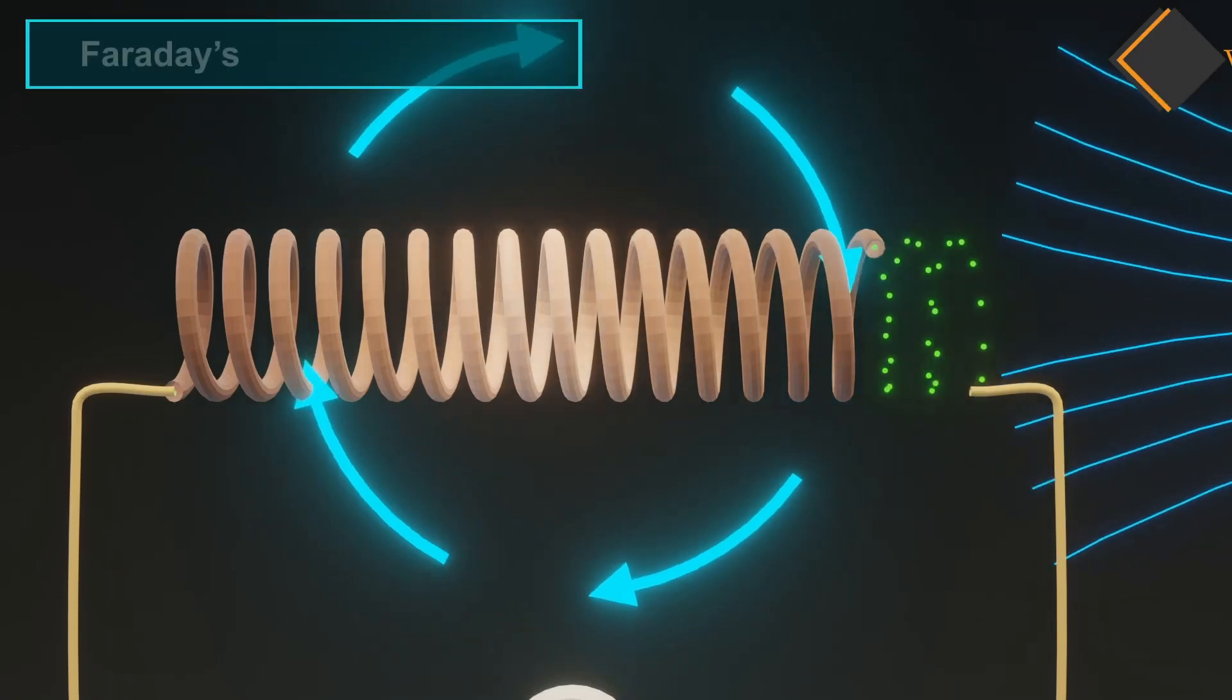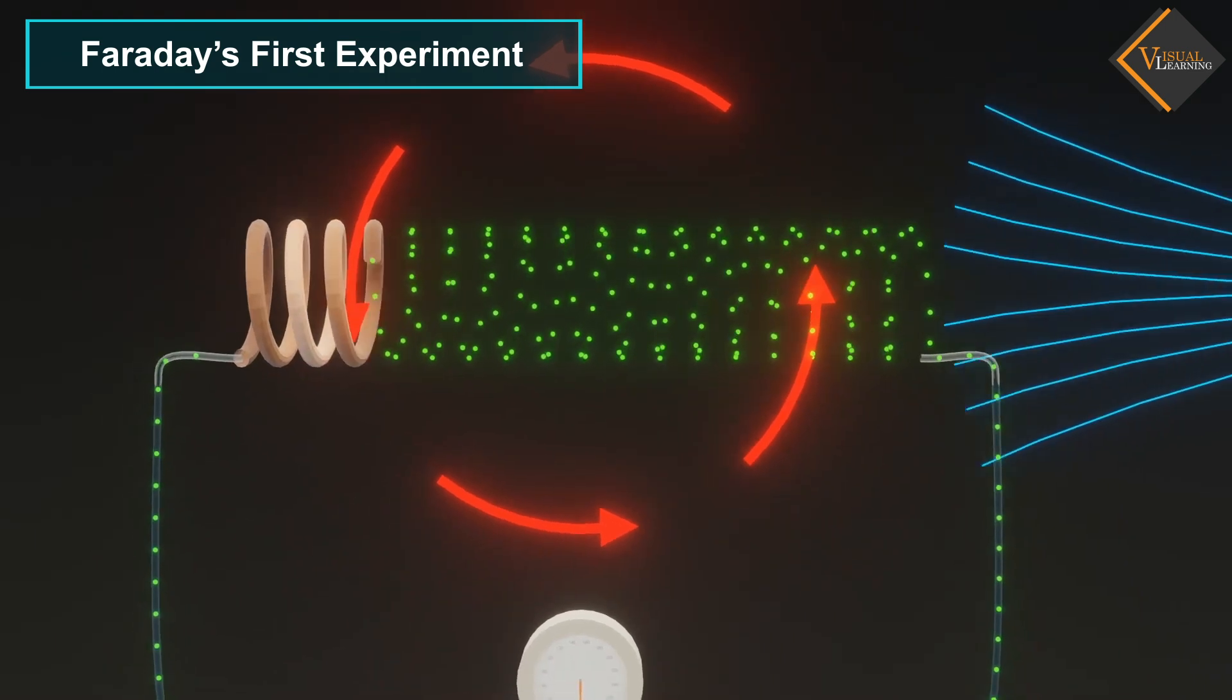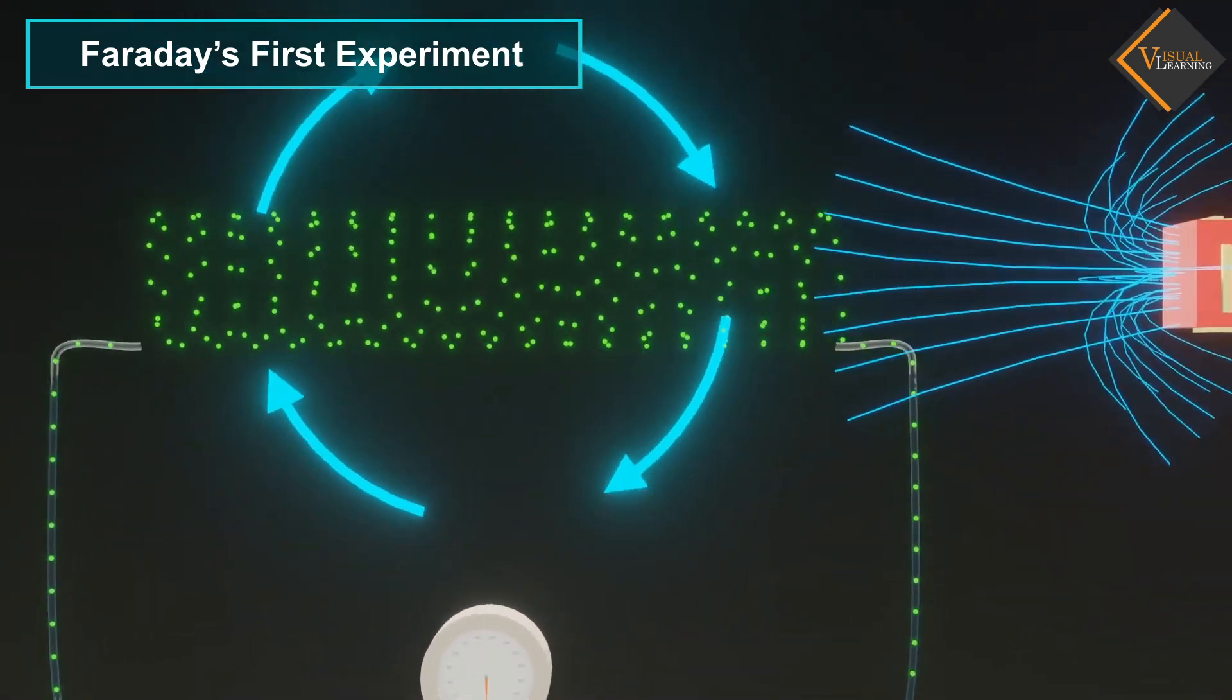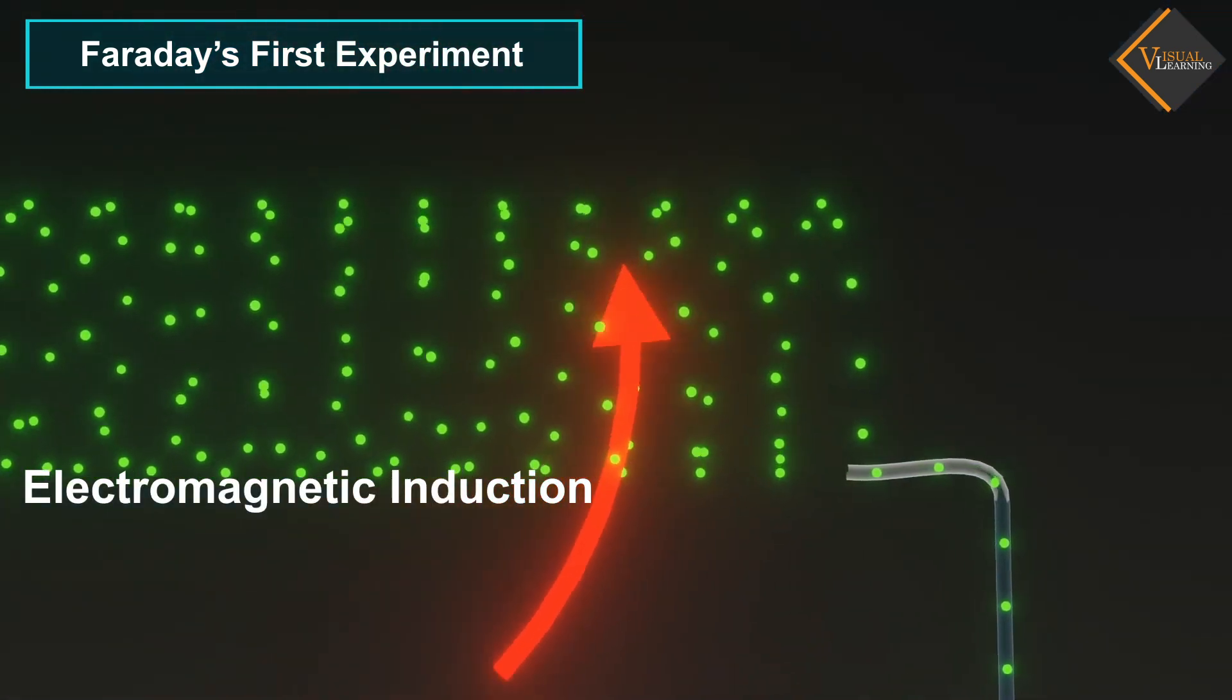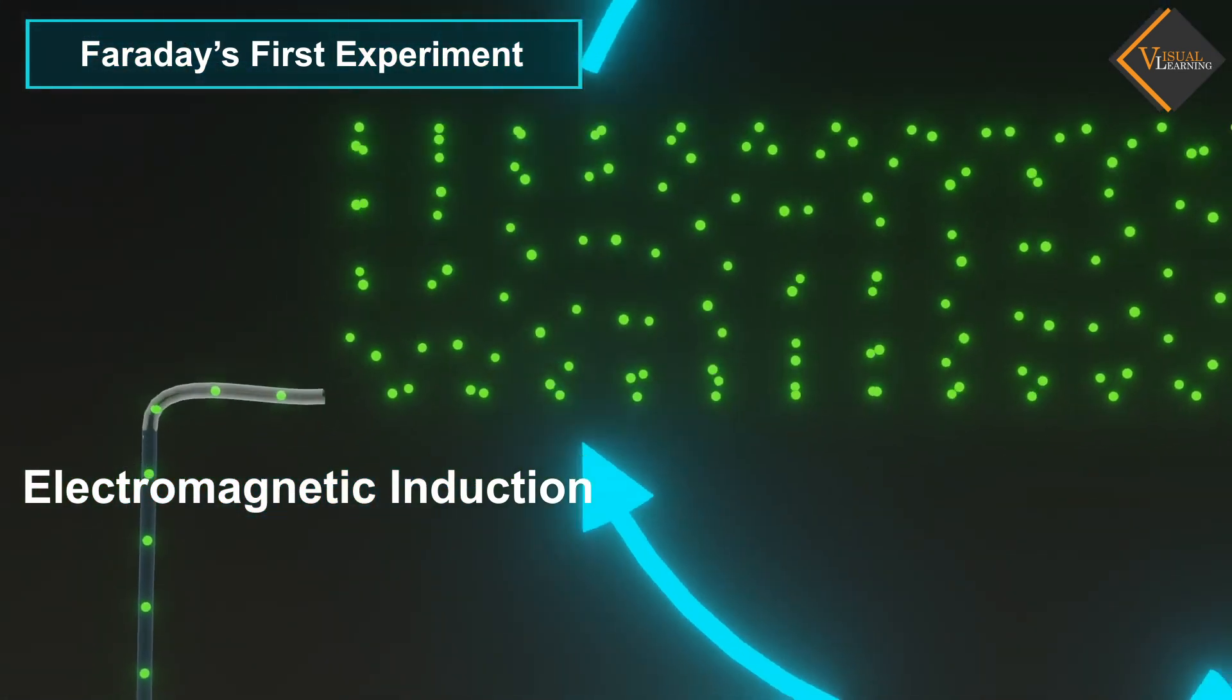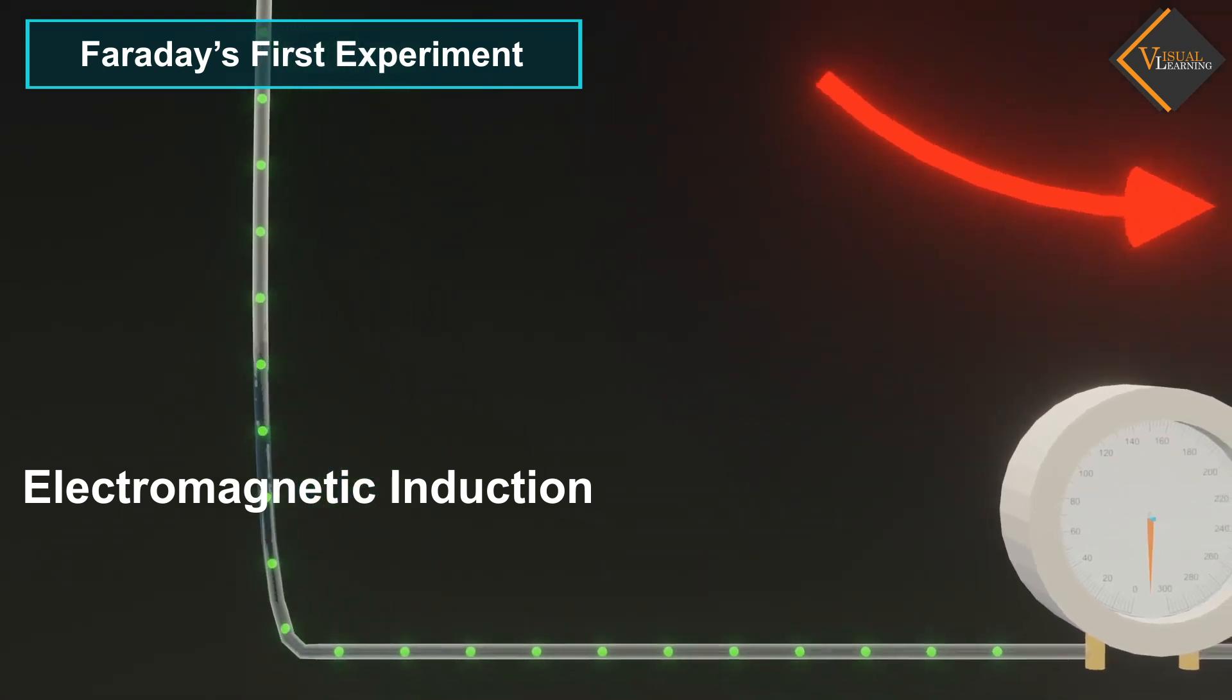In this video, we will understand Faraday's first experiment. Faraday's first experiment is based on the fundamental principles of electromagnetic induction. Faraday's first law, also known as the law of electromagnetic induction, explains the relationship between electric flux in a wire and voltage.